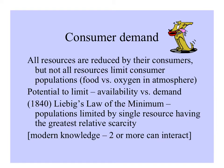By definition, all resources are reduced by their consumers, but not all resources limit consumer populations. You can think of how food limits populations of consumers, but oxygen in the atmosphere is unlimited — populations don't grow to take advantage of all the oxygen. In 1840, Liebig proposed his Law of the Minimum, which said that populations are limited by the single resource having the relative greatest scarcity. Nowadays we know that two or more resources can interact to become limiting, but this still holds true.